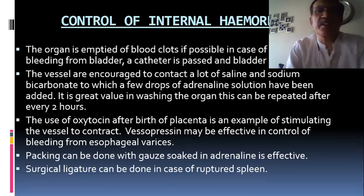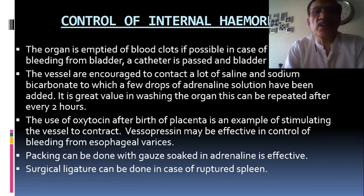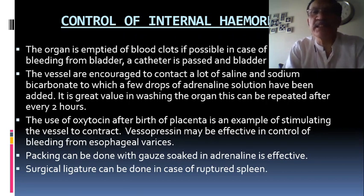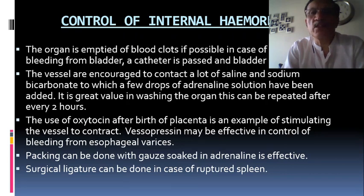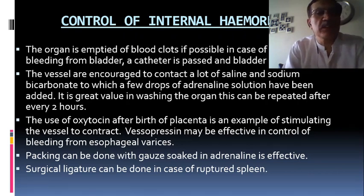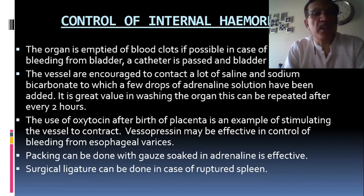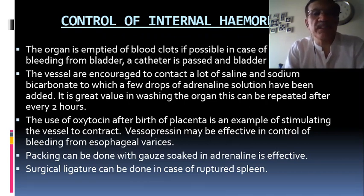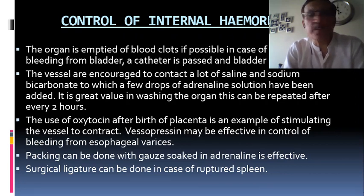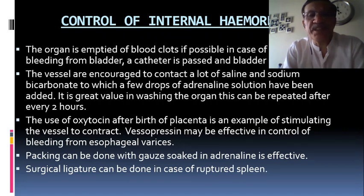To control internal hemorrhage, the organ is emptied of blood clots if possible — in case of bladder hemorrhage, a catheter is placed and the bladder emptied. Vessels are encouraged to contract using saline and sodium bicarbonate solution with a few drops of adrenaline — this can be repeated every 2 hours. Oxytocin after delivery of the placenta is an example of stimulating vessel contraction. Vasopressin may be effective in controlling bleeding from esophageal varices. Packing with gauze soaked in adrenaline is effective. Surgical intervention can be done in case of ruptured vessels.